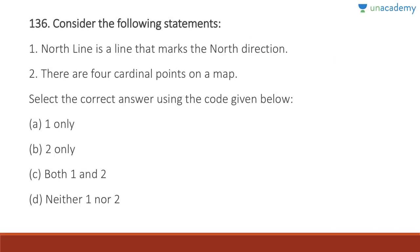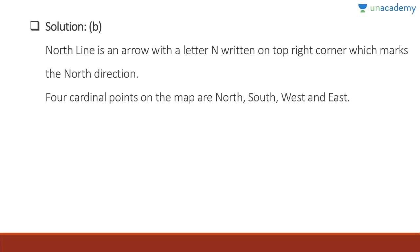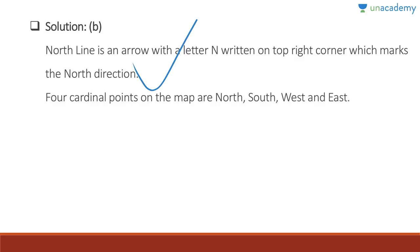Question 136: A north line is an arrow with the letter N written on the top right corner marking the north direction — correct. Four cardinal points indicate the directions: North, East, West, and South. Answer is B, two only. The north line is not merely a line — it is specifically an arrow with N on top marking north direction, and the four cardinal points are NEWS: North, East, West, South.